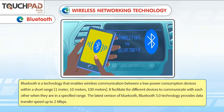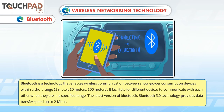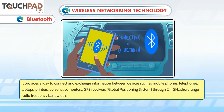Bluetooth. Bluetooth is a technology that enables wireless communication between low-power consumption devices within a short range — 1 meter, 10 meters, or 100 meters. It facilitates different devices to communicate with each other when they are in a specified range. The latest version, Bluetooth 5.0, provides data transfer speeds up to 2 Mbps.